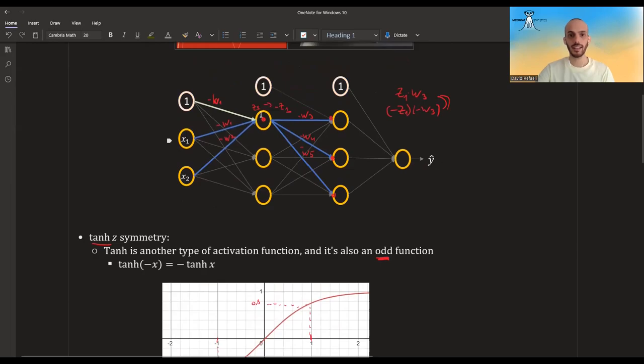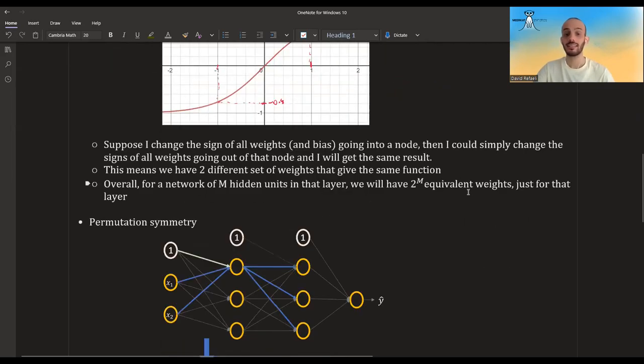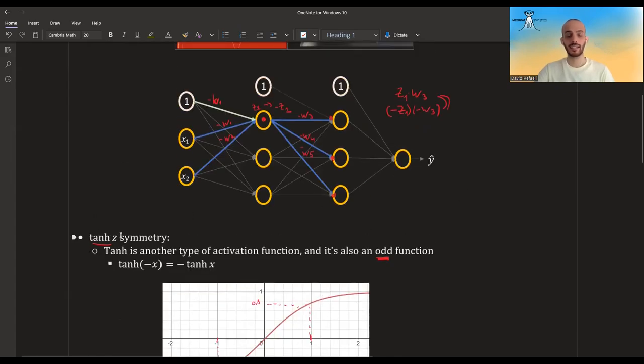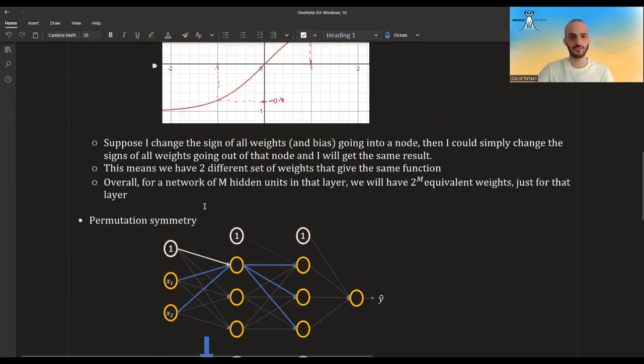So there's two, and that's two per each node in this layer of hidden units. So there's two times two times two. In this case, there's eight. If we had M number of hidden units here, we'll have two to the power of M. And this is just for one layer. Again, this happened because we used the tanh symmetry. There's also symmetries caused by other activation functions.